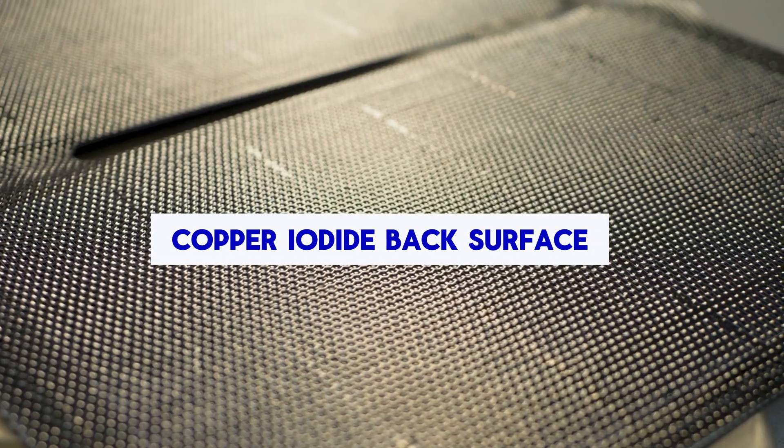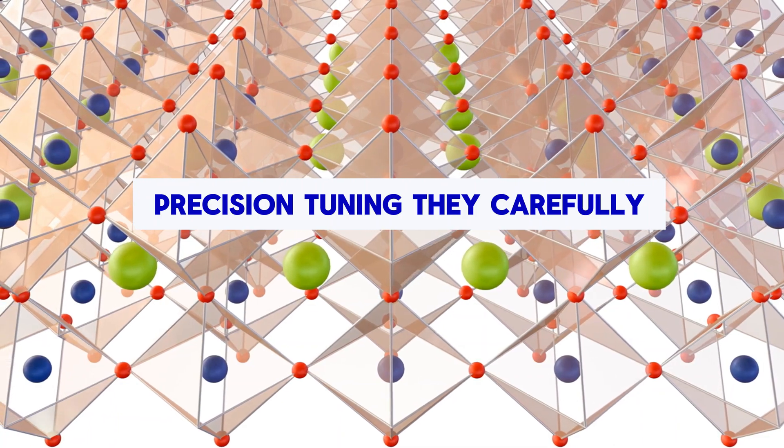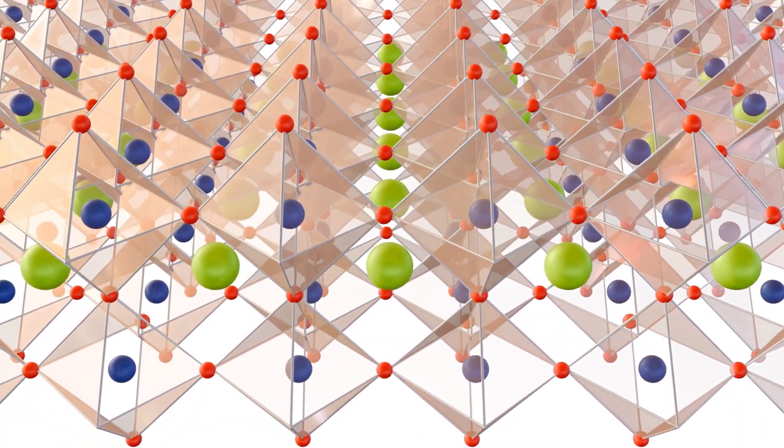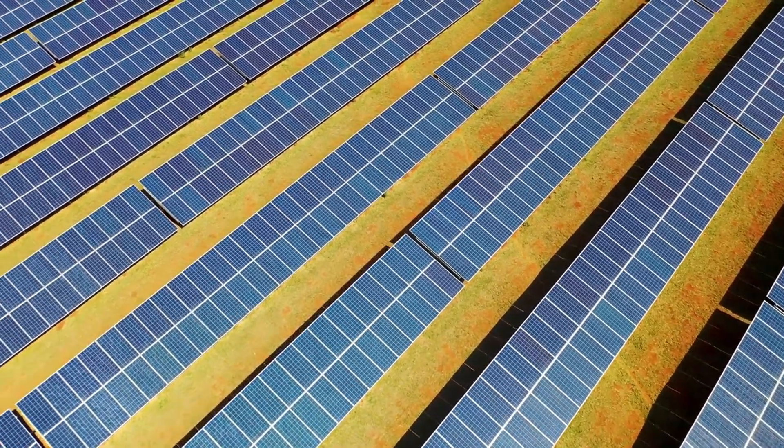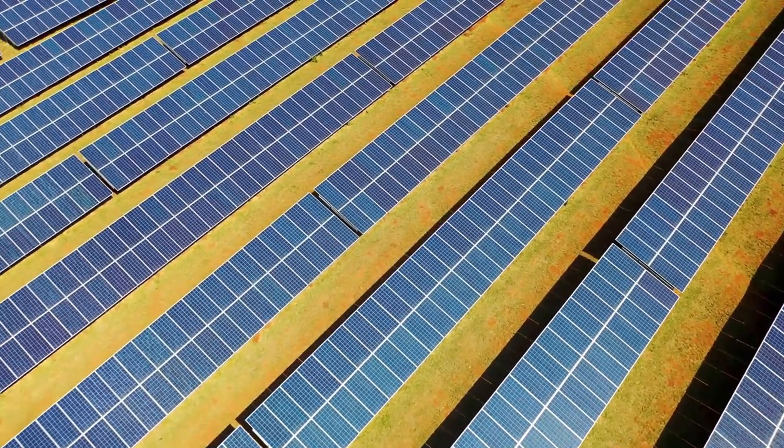Copper iodide back surface field: This created a stronger internal electric field, reducing energy loss from electron recombination. Precision tuning: They carefully adjusted the thickness and carrier density of each layer to optimize how electrons move. Every little tweak added up, leading to a huge performance leap.